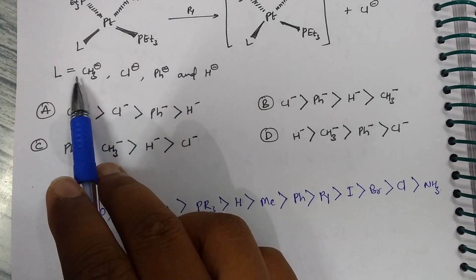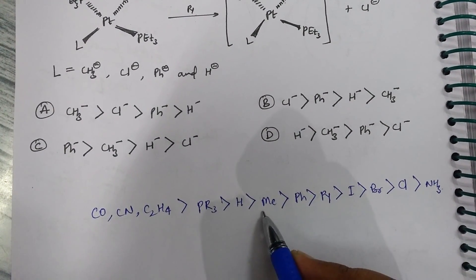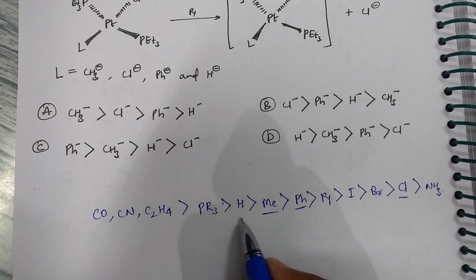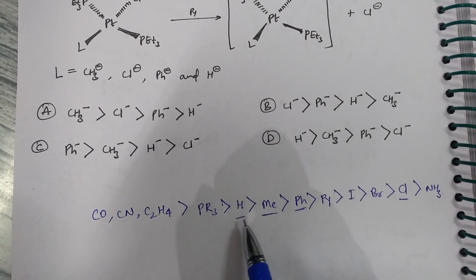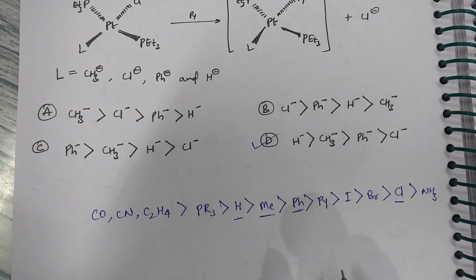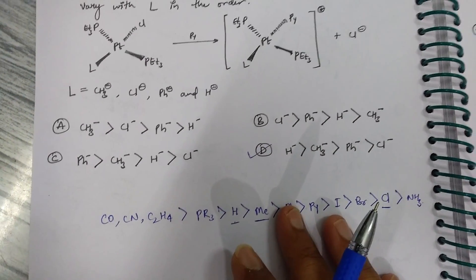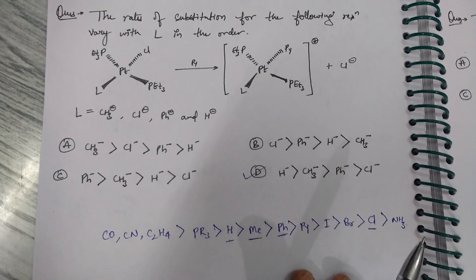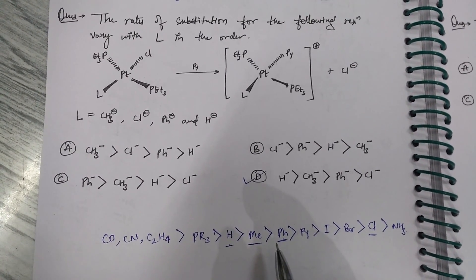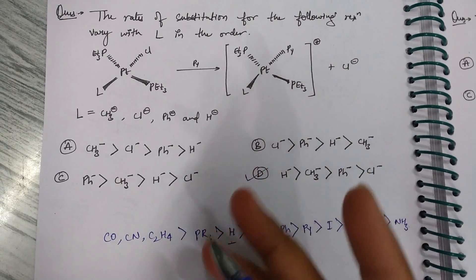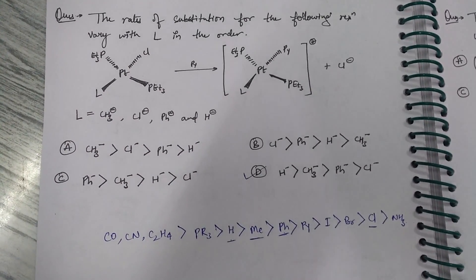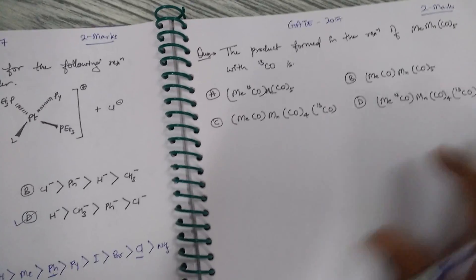From the four ligands given — methyl, Cl, Ph (phenyl), and H — you just need to locate them in the trans effect series. The order from highest to lowest trans effect is: H > methyl > phenyl > Cl. So you have to check which option lists H first, then methyl, then phenyl, then chlorine. Clearly, option D is the correct one. If you know this series, you can easily answer this two-mark question. A link for more on trans effect is in the description.